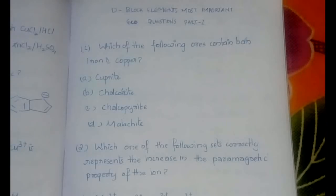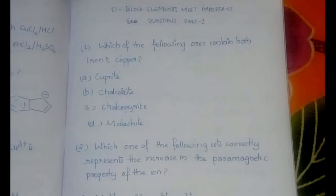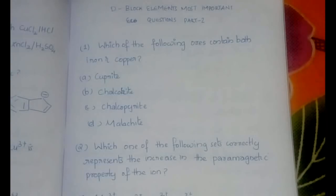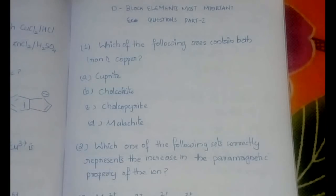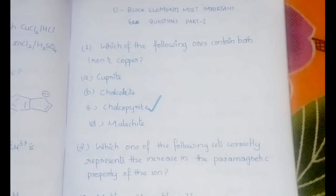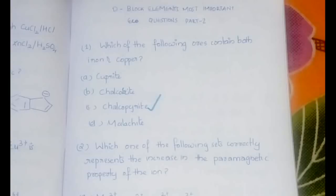The first question is a factual question: which of the following ores contains both iron and copper? This is very important for all PG entrances as well as Plus 2 level entrances, because questions about ore names come up frequently, including in government-level examinations. The answer is chalcopyrite — it is the ore which contains both iron and copper.